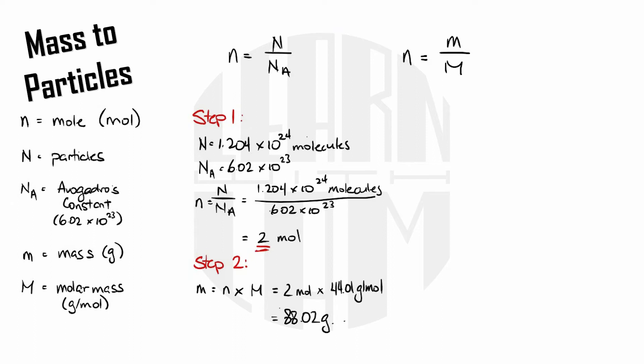If we're going the other way we're pretty much just doing the exact same process in reverse. So if I have 22.005 grams of carbon dioxide how many molecules of carbon dioxide do I have? First things first, my givens are mass equals 22.005 grams and since I'm using mass to find moles I'm going to need molar mass which again is 44.01 grams per mole. The equation I'm using is moles equals mass over molar mass so 22.005 grams divided by 44.01 grams per mole gives me 0.5 moles.